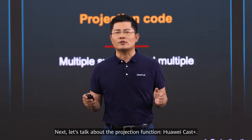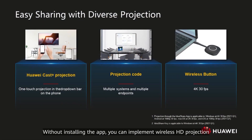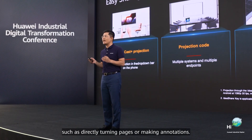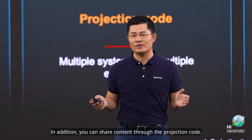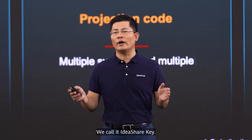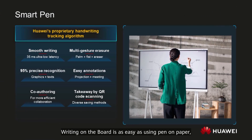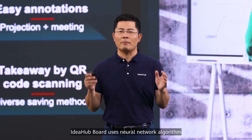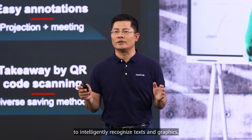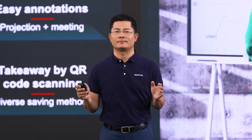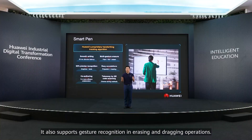Let's talk about the projection function: Huawei Casting. Without installing any app, you can implement wireless HD projection from the drop-down menu on your mobile phone. You can operate your phone on the big screen, such as directly turning pages or making annotations. You can also share content through the projection code, which we call IdeaShareKey. Writing is another core capability of the board. Writing on the board is as easy as using a pen on paper, leveraging its 35-millisecond ultra-low writing latency. The IdeaHub Board uses a neural network algorithm to intelligently recognize text and graphics and convert handwriting to legible digital forms, and also supports gesture recognition for erasing and dragging operations.